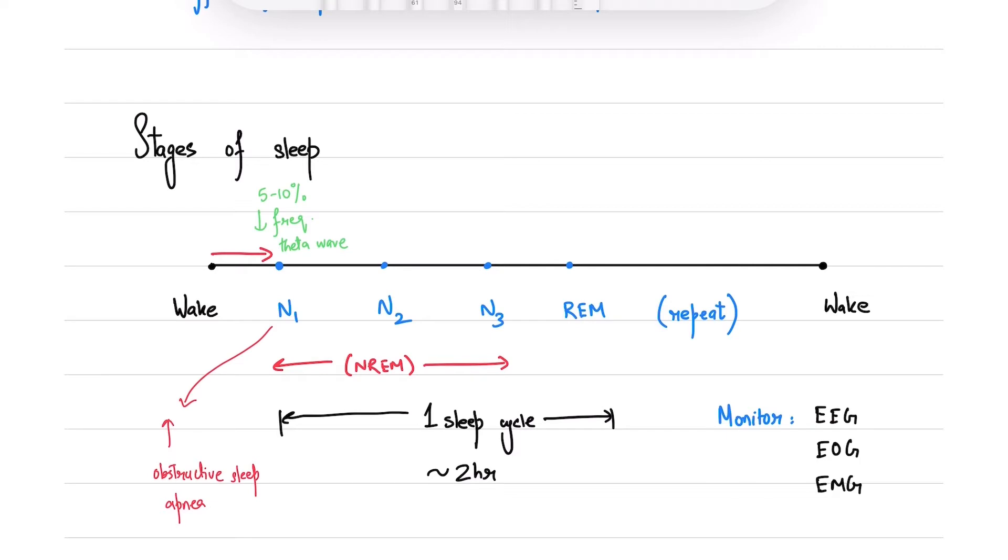N2 constitutes 45 to 55%, forming the majority. You'll see theta wave frequency here. In N2, you'll see two unique patterns in the EEG: spindle waves and K complexes. Benzodiazepines increase N2 sleep; they stimulate spindle activity primarily.